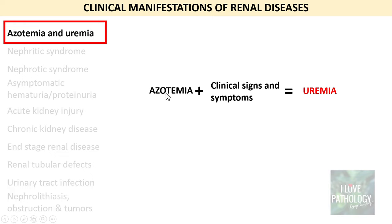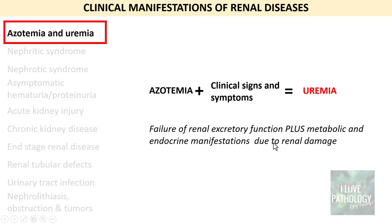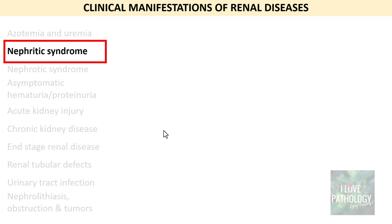Uremia is basically azotemia plus clinical signs and symptoms. They manifest with failure of renal excretory function along with metabolic and endocrine manifestations, and that is basically because of renal damage. So just remember: uremia is azotemia plus clinical signs and symptoms.